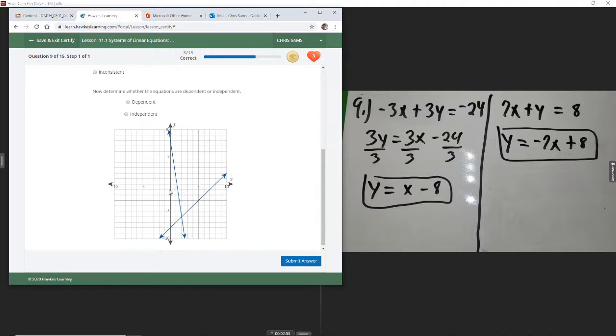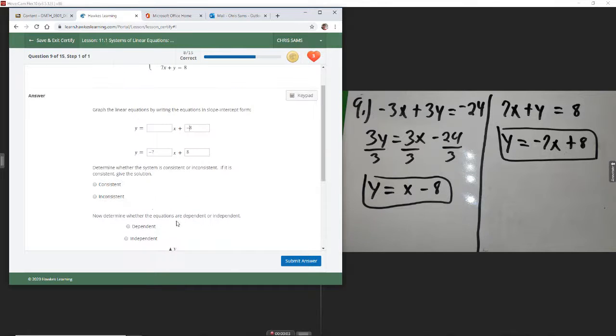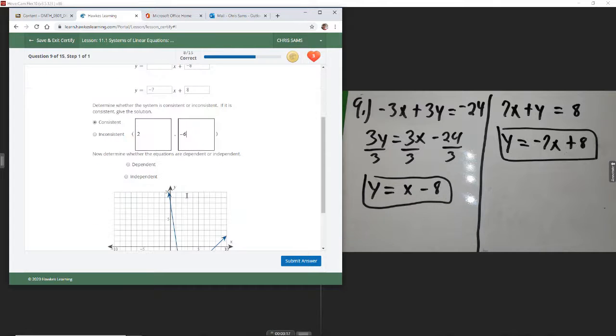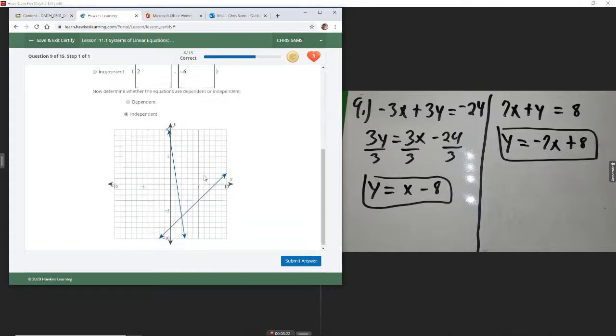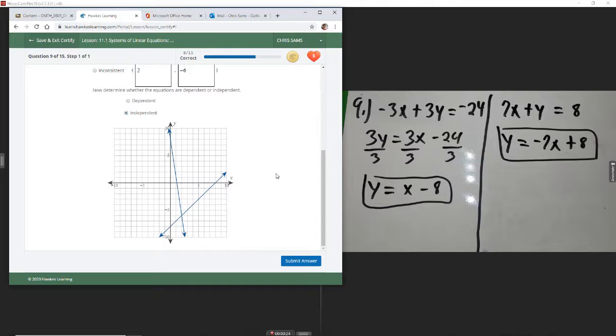Okay, so these have graphed. It looks like our solution is positive 2 and down 6, positive 2, negative 6. So we're going to say that this is consistent because it does give us a solution. That solution was positive 2 and negative 6. And then because we got two different lines, they're independent. Each one of those lines we call independent.